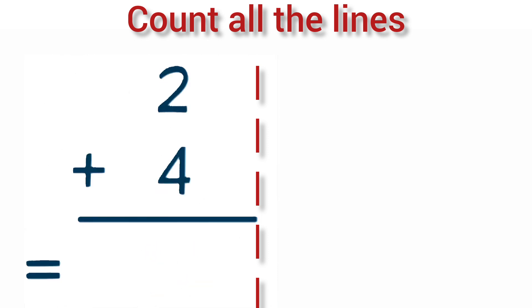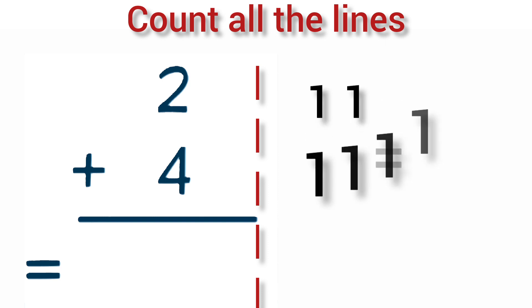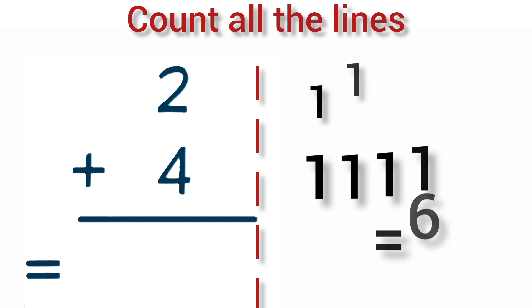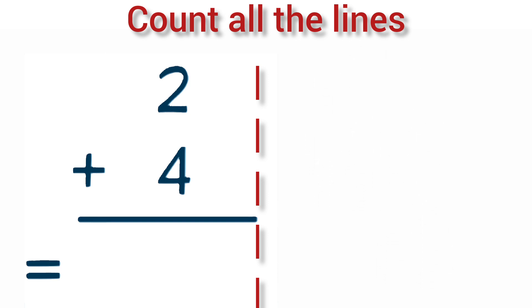Add 2 plus 4. 2 lines plus 6 lines is equal to 6. So, 2 plus 4 is equal to 6.